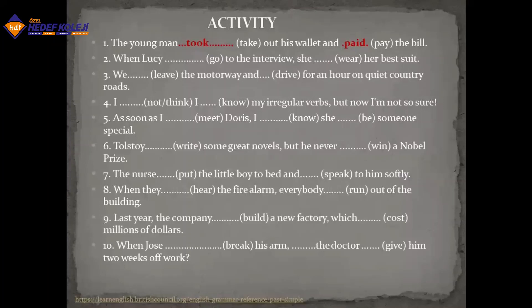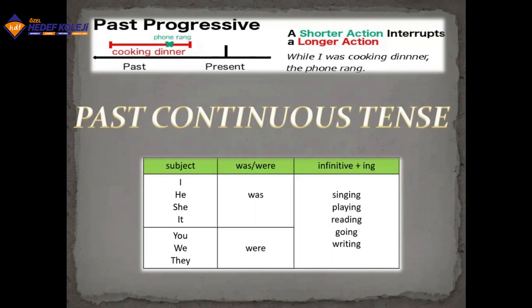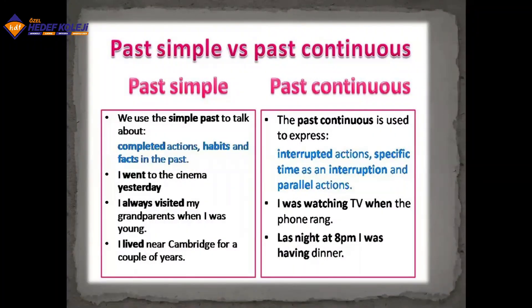Now past progressive — we know simple past is about completed actions, but past progressive is about an interrupted, longer action. For example: 'While I was having a shower, the bell rang.' The form of past continuous is: 'was/were' plus the infinitive with '-ing'. For example: sing→singing, play→playing, read→reading, go→going, write→writing. The difference: simple past talks about complete actions — 'I went to the cinema yesterday' — while past continuous expresses interrupted actions or parallel actions — 'I was watching TV when the phone rang.'